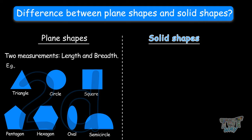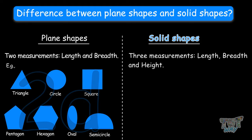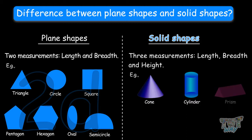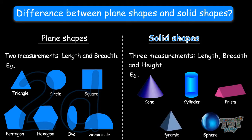Next, what are solid shapes? Solid shapes have three measurements. They have a length, breadth, and height — yes, they have a height too. That is, they have three dimensions, and that's why they are called 3D shapes. Examples are the cone, cylinder, prism, pyramid, and sphere.